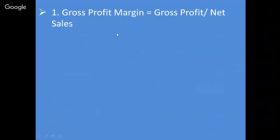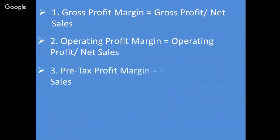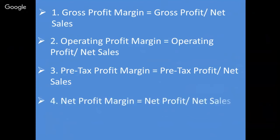Gross profit margin کا فرمولہ ہے: gross profit divided by net sales۔ Operating profit margin کا فرمولہ ہے: operating profit divided by net sales — یہ net sales سب میں common ہے۔ Net profit margin is equal to net profit divided by net sales۔